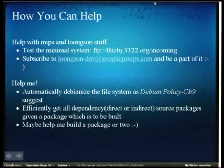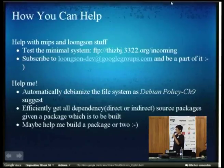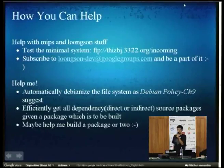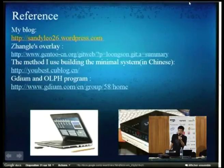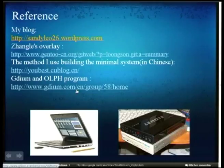There are many things you can help with. You can test this minimal system — I've already uploaded it to the FTP. You can also subscribe to the mailing list to be part of it. There are many practical problems I've encountered, for example how to automatically Debianize the file system as Debian policy manual suggests, and how to efficiently get all dependency source packages. Maybe you can also help me build a package or two. You can see this is my development blog, and this is the method I use to build this minimal system.